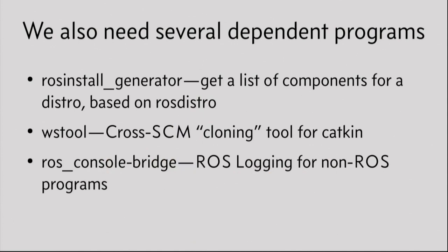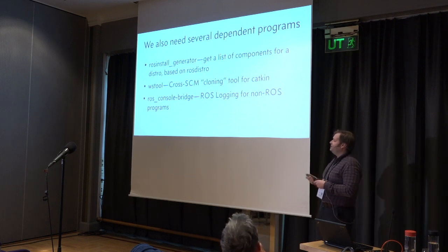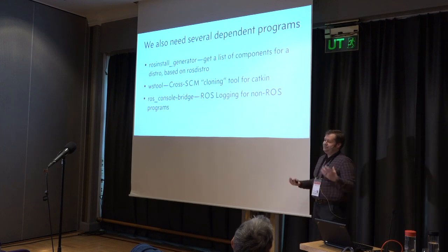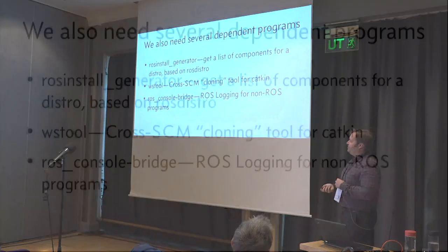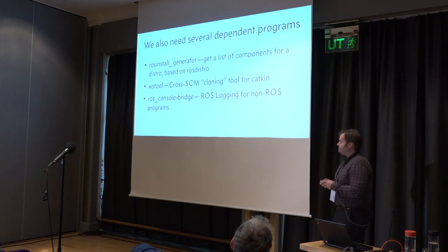The other programs needed are the rosinstall_generator, which uses the ROS distro file to pull out the names of components needed, storing them in a file that's fed to wstool. Wstool is a cross-source-code-control mechanism for downloading shallow clones of repositories into a Catkin workspace. Catkin is CMake and Python macros. There's also something called ROS console bridge, which bridges information from one program into ROS's logging system. Most of these were Python libraries or ports, so it was pretty straightforward to create ports for all of them.